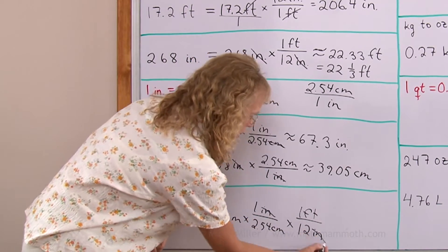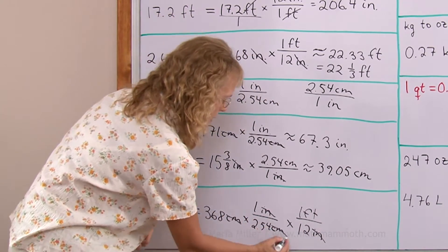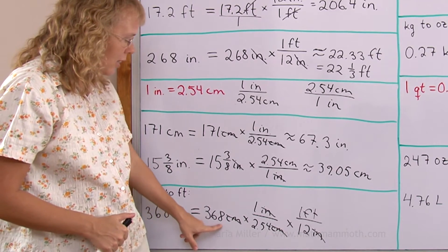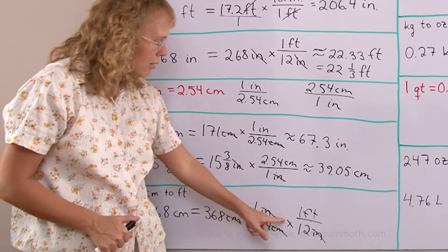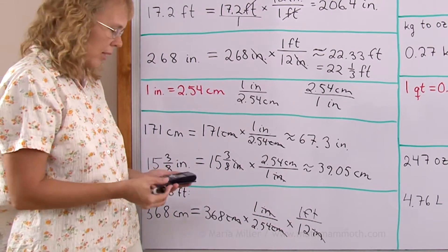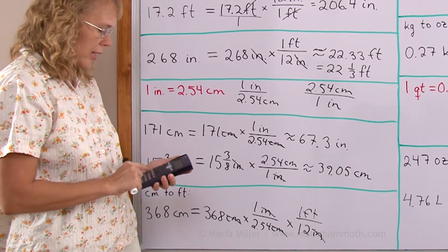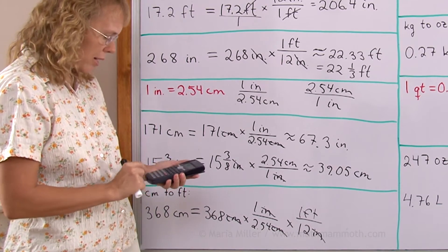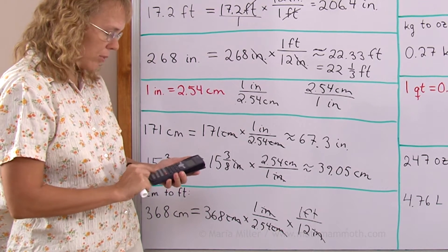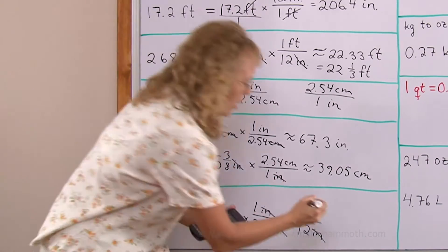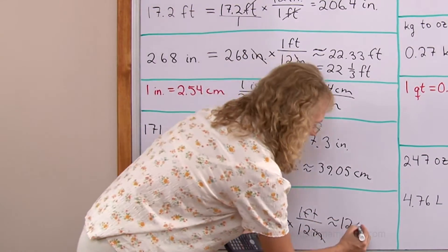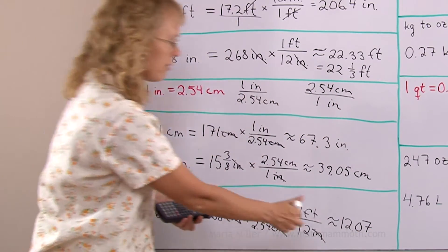And now the inches cancel out, the centimeters cancel out, the units, not the numbers. And then what I have here is 368 times 1 times 1, and then divide it by this and divide it by that. So 368 times 1 times 1, I don't need to do that. I just divide it by 2.54, and then I divide that by 12. Two divisions here. I get approximately 12.07, and now my units are feet.